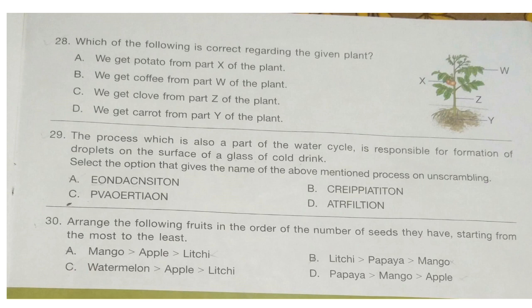Question 29. The process which is also part of the water cycle is responsible for formation of droplets on the surface of a glass of cold drink. Select the option that gives the name of the above mentioned process on unscrambling.